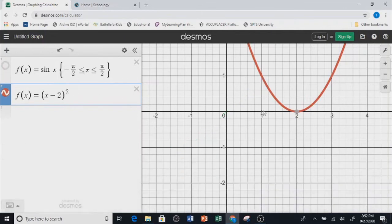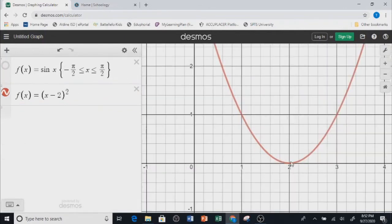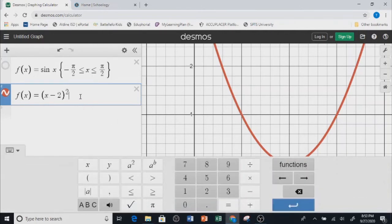This is definitely a quadratic function, and the vertex is at (2, 0). Let's say I want to restrict the domain and take the left side. I can just say x is less than or equal to 2.